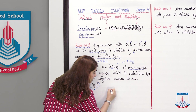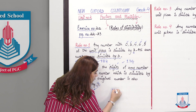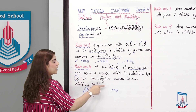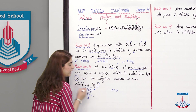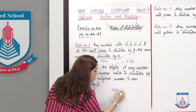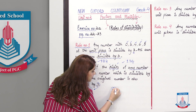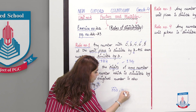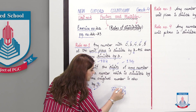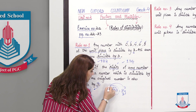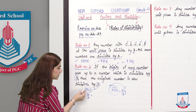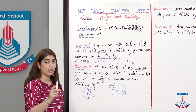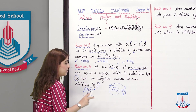Let's try another example: the number 333. We add the digits: 3 plus 3 is 6, and 6 plus 3 is 9. Since 9 is divisible by 3, it means the original number 333 is also divisible by 3.